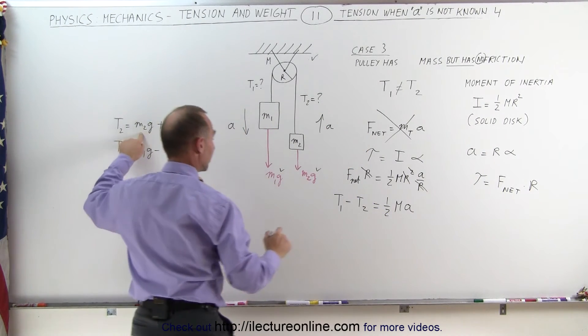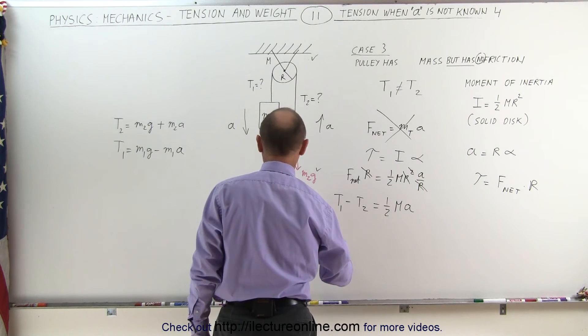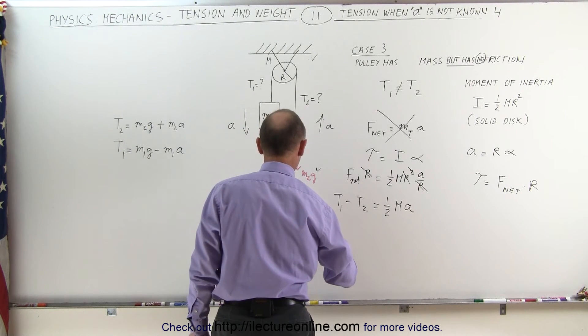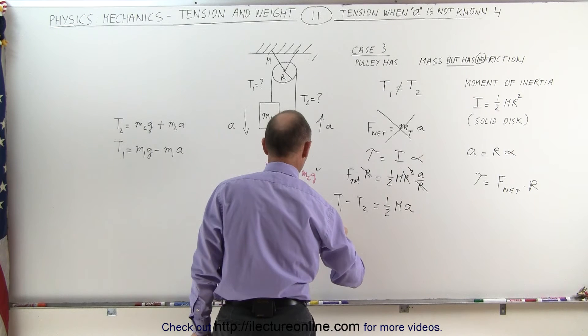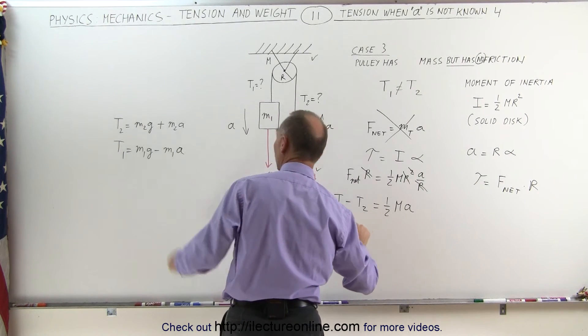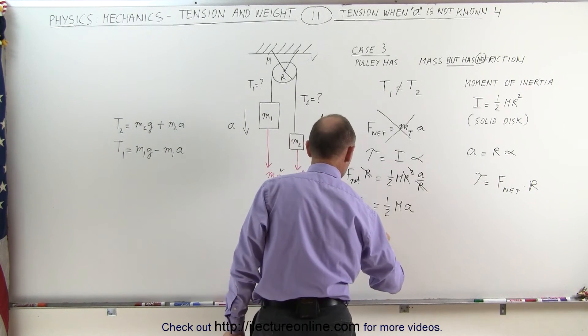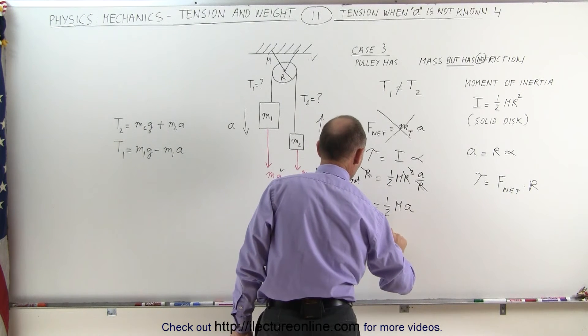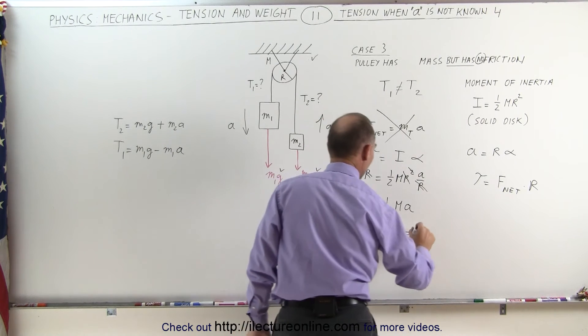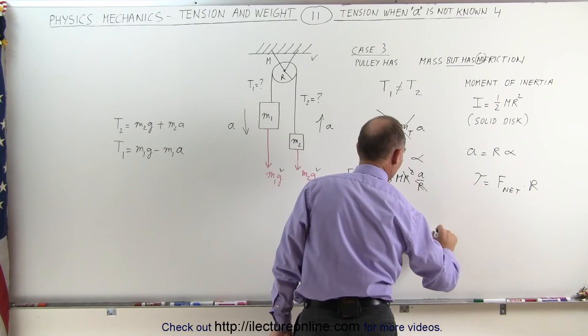And then tension 1 can be, we can write in there, we have tension 1 is M1G minus M1A. Subtract from that tension 2 which is M2G plus M2A and that equals one-half the mass times acceleration.